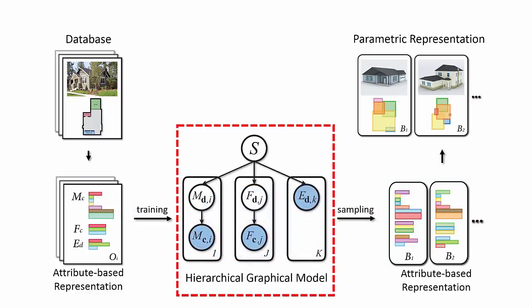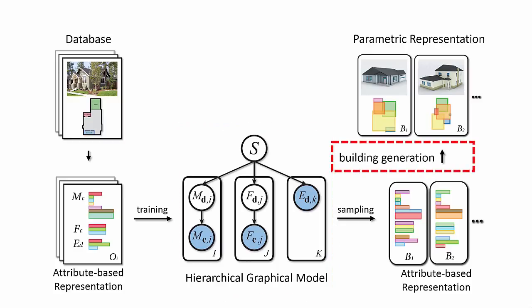Second, we propose a hierarchical graphical model with hidden variables to encode the relationships between building attributes. Third, we provide optimization algorithms to generate three-dimensional models based on building attributes sampled from the graphical model.